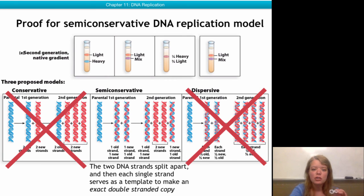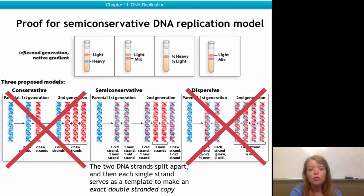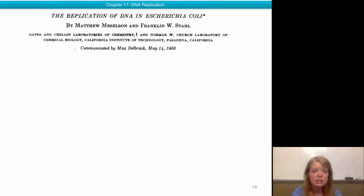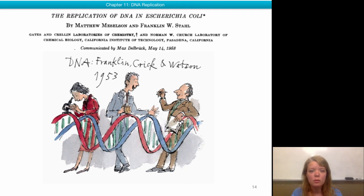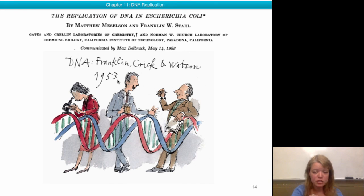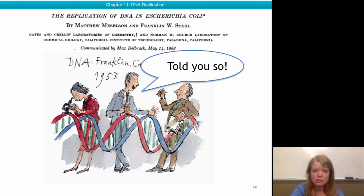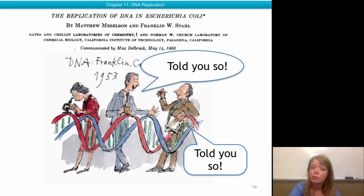Semi-conservative means that the two DNA strands are split apart, and each single strand serves as a template for the new generation of DNA molecules, creating exact double-stranded copies. This is the actual paper published in the Proceedings of the National Academy of Science in 1958 by Matt Meselson and Frank Stahl. Meselson and Stahl published that paper in 1958 — only five years after Crick and Watson reported their DNA structure model. Watson said "I told you so," and so did Crick, but in a more polite British manner.